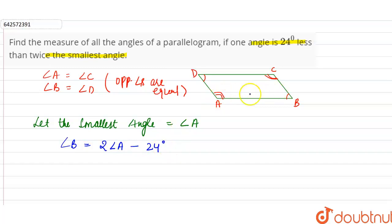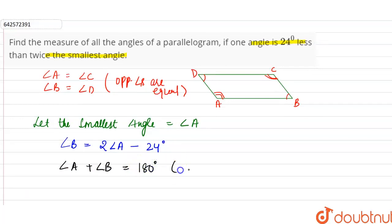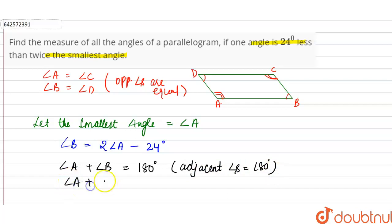Now, we know that the sum of two adjacent angles of a parallelogram is 180 degrees. Therefore, we can say that angle A plus angle B is equal to 180 degrees. Reason: adjacent angles make supplementary angles, meaning 180 degrees. Therefore, substituting, angle A plus (twice of angle A minus 24 degrees) equals 180 degrees.